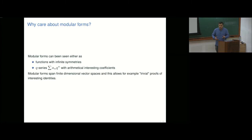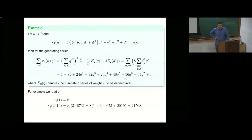If you know that two modular forms coincide with the first ten coefficients, then you know they must be the same. And this allows you to prove identities just by miracle. I'd like to motivate this with an example which is due to Legendre.